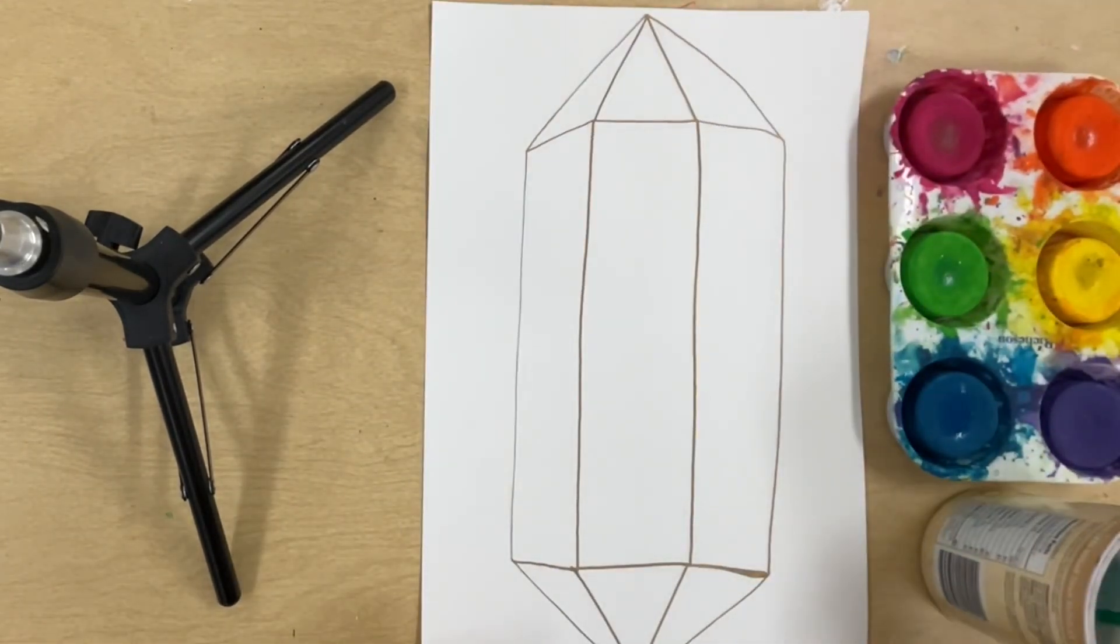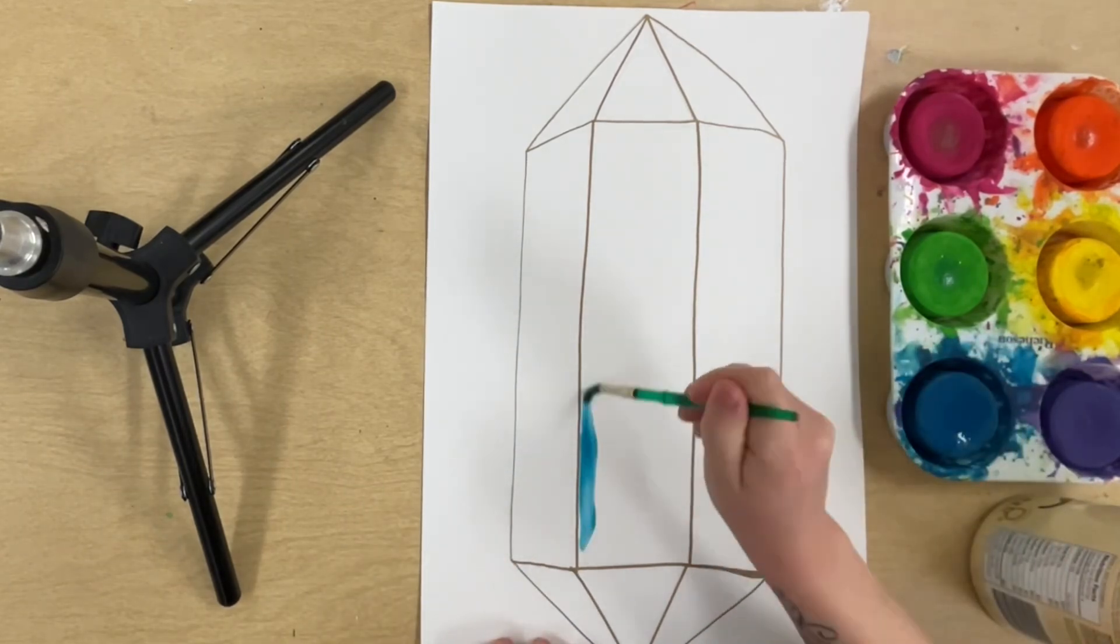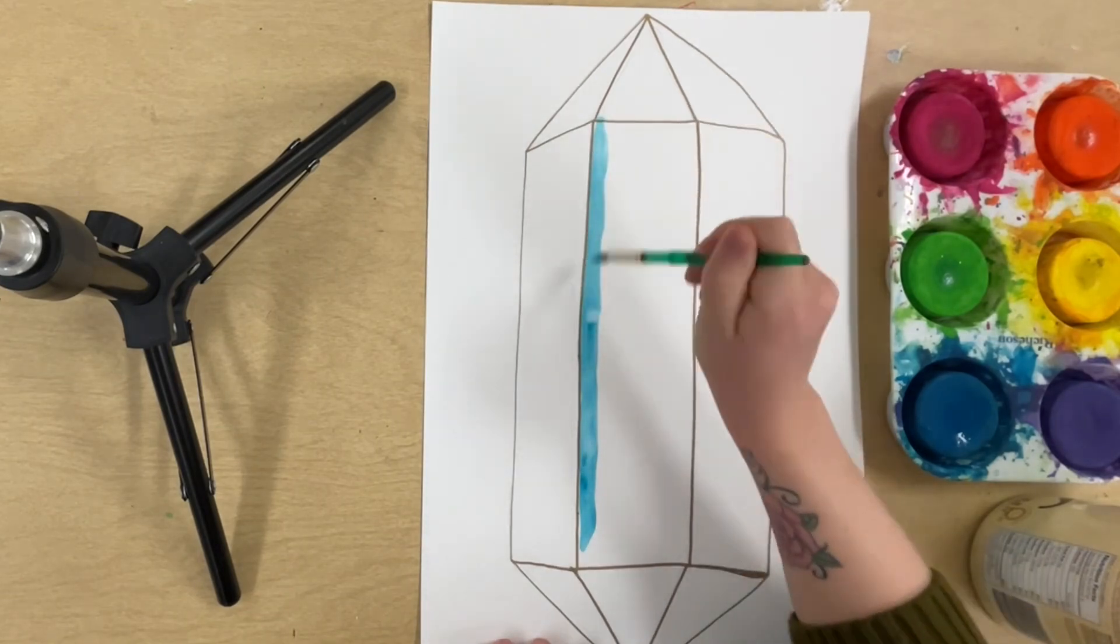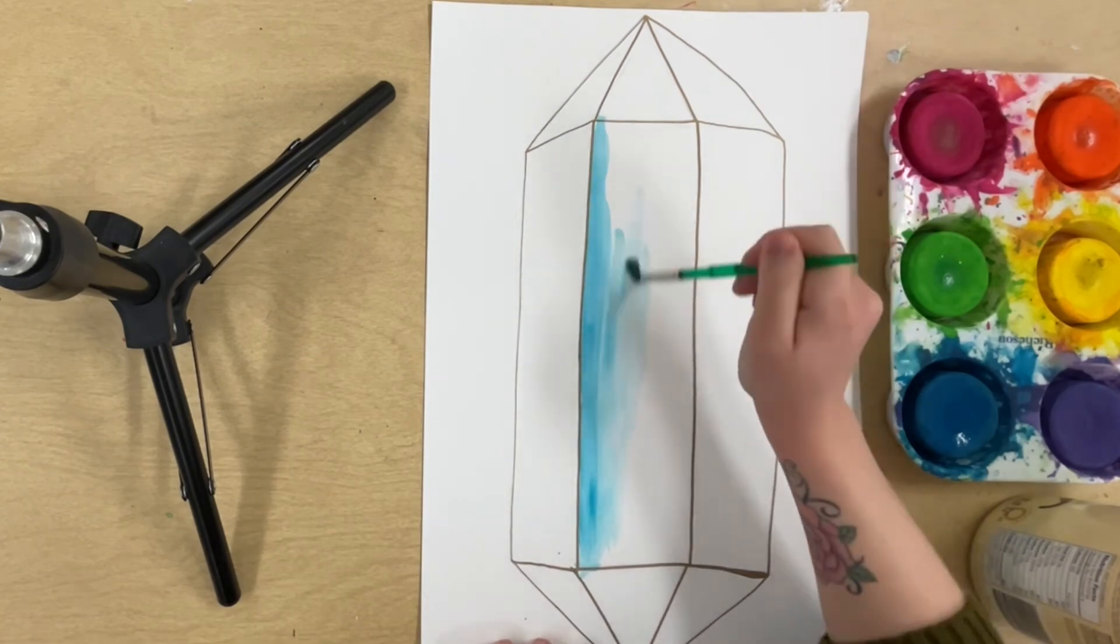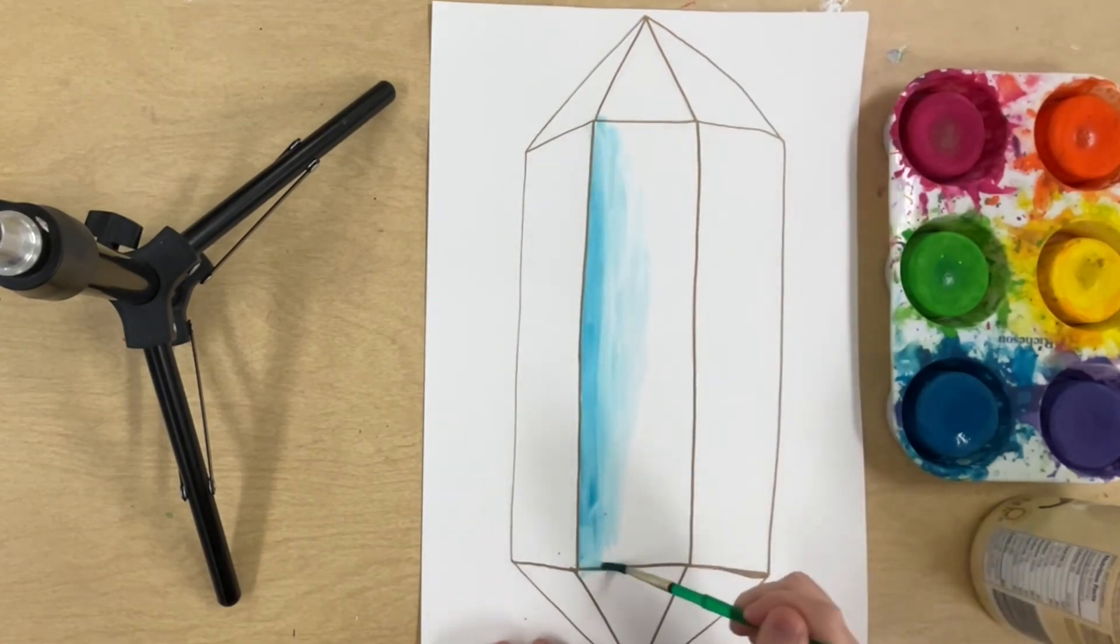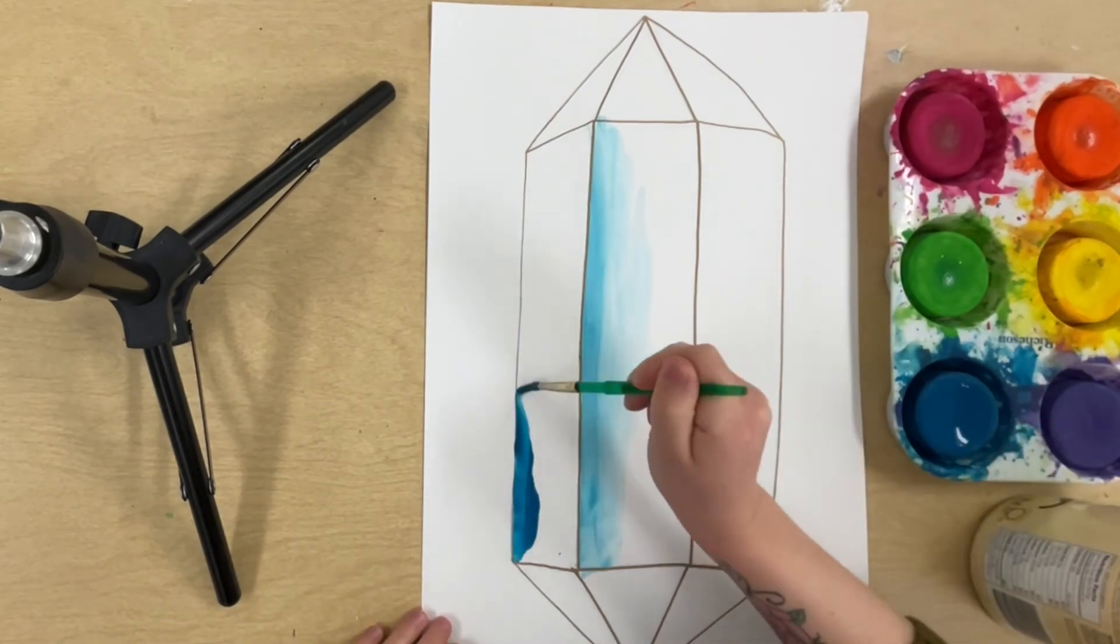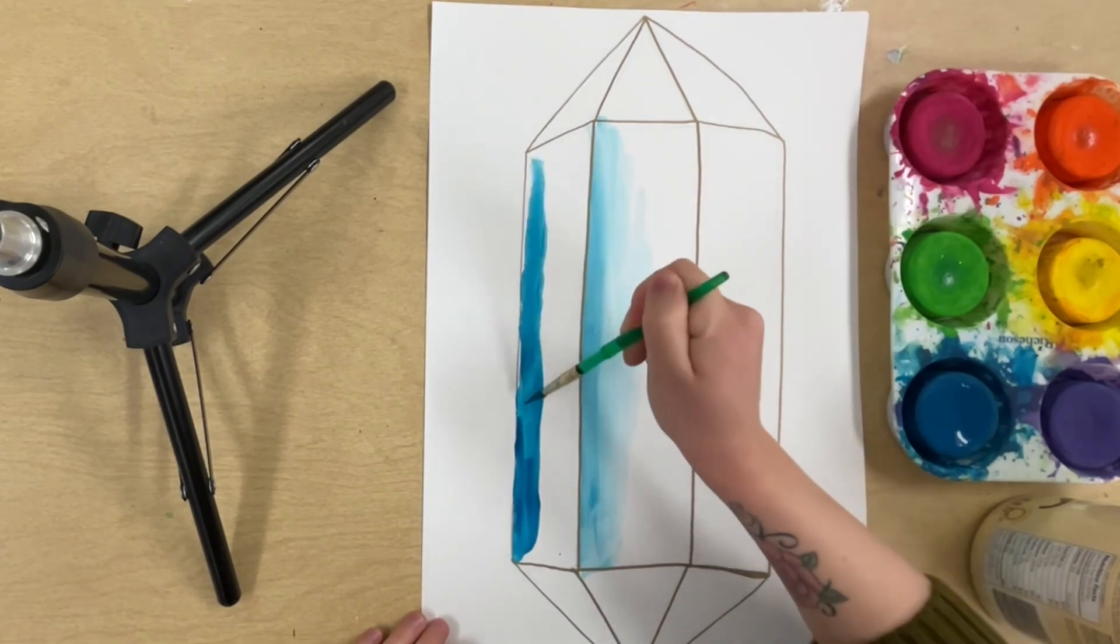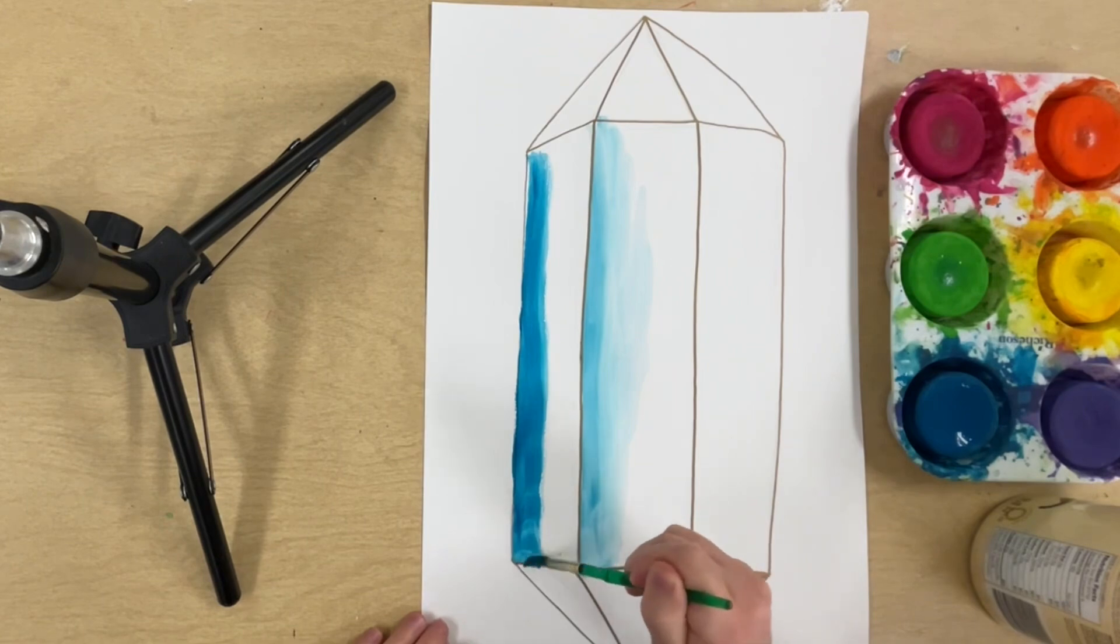Now it's time to paint. And when I paint my gemstone, I'm going to think about value, which is the lights or darks in a work of art. Darker values kind of represent shadows or where light really isn't hitting the object, and lighter values represent highlights or where light is hitting the object and reflecting off of it. So when you paint your gemstone, please be sure to use all kinds of different values from very dark to very light.